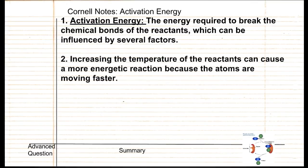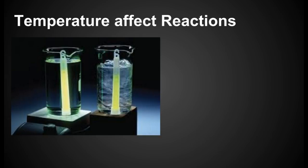So one of the things that can influence activation energy is increasing the temperature of the reactants. It can cause the atoms to move around more, which can also cause the reaction to be more energetic. So in this image right here, you see a glow stick. Remember, glow sticks are a form of exothermic chemical reactions, which are usually a chemical called luminol.